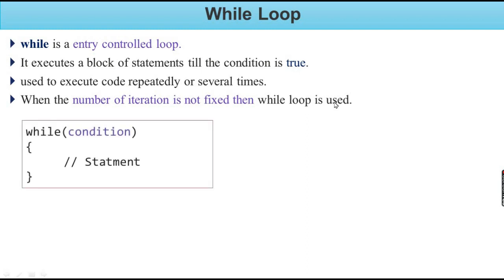When implementing the while loop syntax, the condition or expression is evaluated. The expression always returns either true or false. If true, the statement inside is executed. If false, the statement is skipped and the while loop exits.